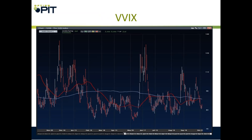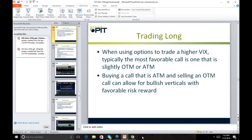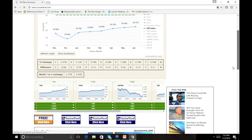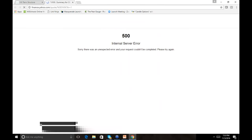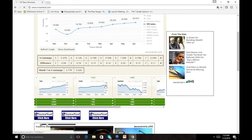Here is VVIX, which is the VIX of VIX options — it is volatility of volatility. What do you notice? That is mean-reverting as they come. Right now VVIX is well near 120 again. VIX closed over 120.